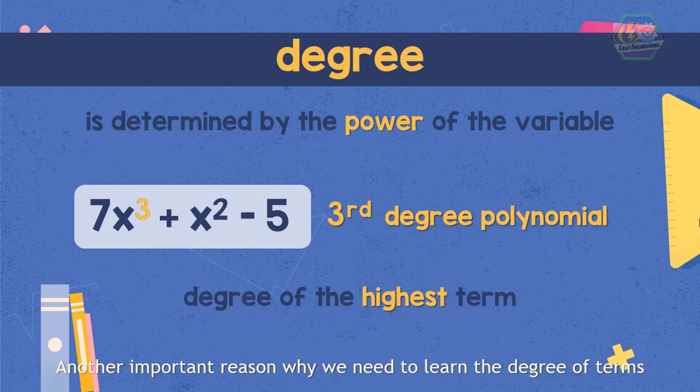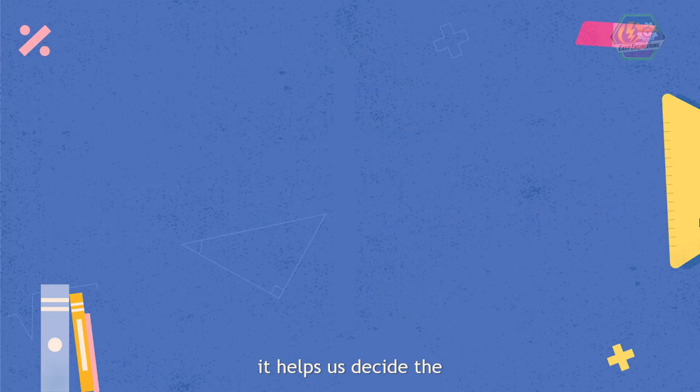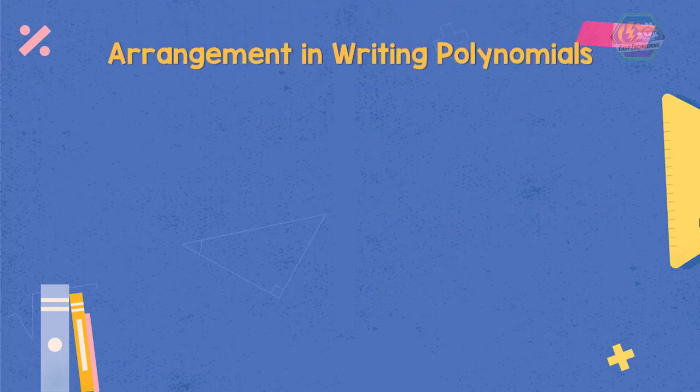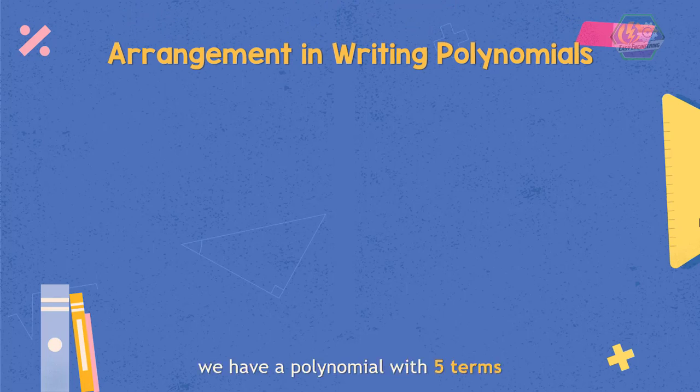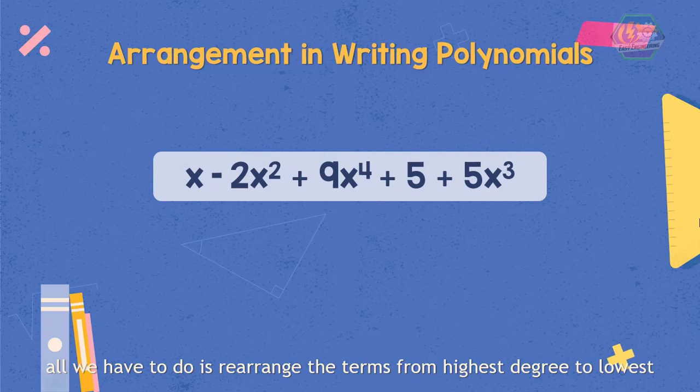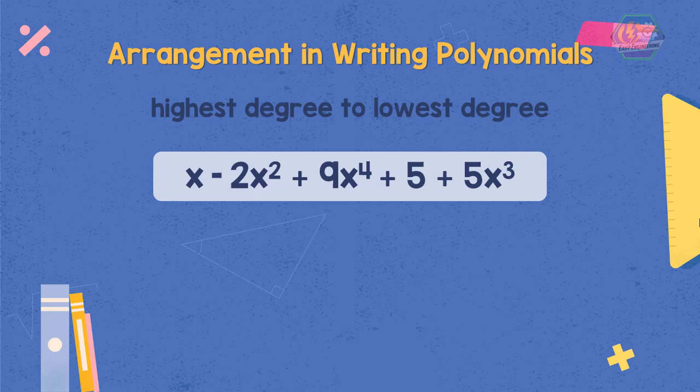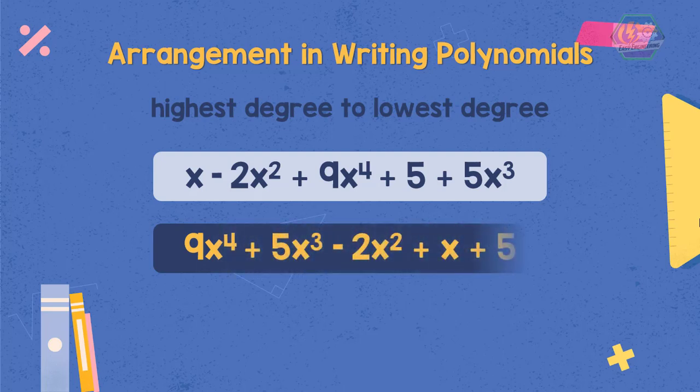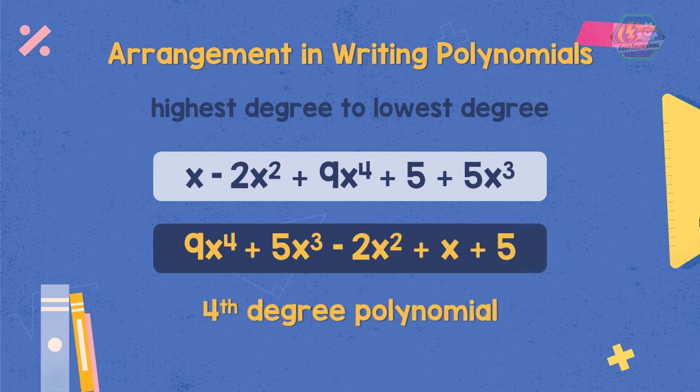Another important reason why we need to learn the degree of terms is because it helps us to decide the arrangement in writing polynomials. For example, we have a polynomial with 5 terms. All we have to do is rearrange the terms from highest degree to lowest. For this example, we'll become 9x to the power of 4 plus 5x cubed minus 2x squared plus x plus 5. And this example is a fourth degree polynomial.